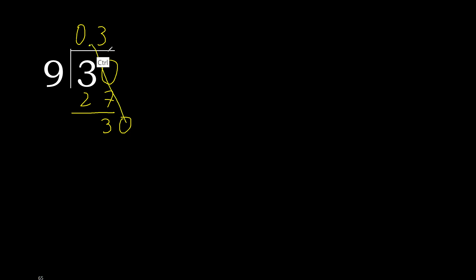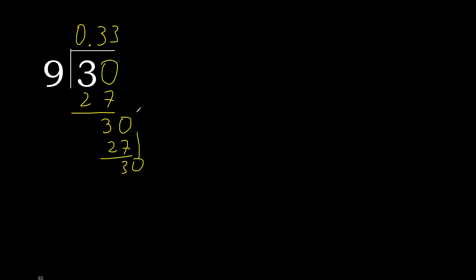Point is here. 30 again: 9 multiplied by 3 equals 27, subtract — complete. Point is here. 30: 9 multiplied by 3 equals 27, subtract — complete.